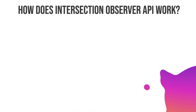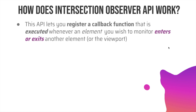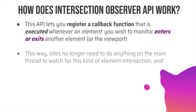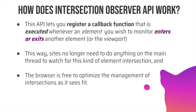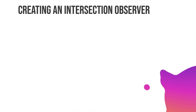Now that we've established the requirement and why we should use the Intersection Observer API, let's talk about how it actually works. This API lets you register a callback function that is executed whenever an element you wish to monitor enters or exits another element or the viewport. This way the site no longer needs to do anything on the main thread to watch element intersection, and the browser is free to optimize the management of intersections as it sees fit.